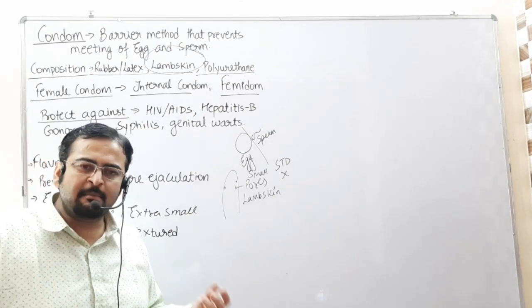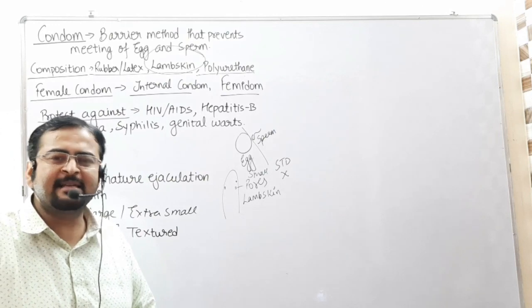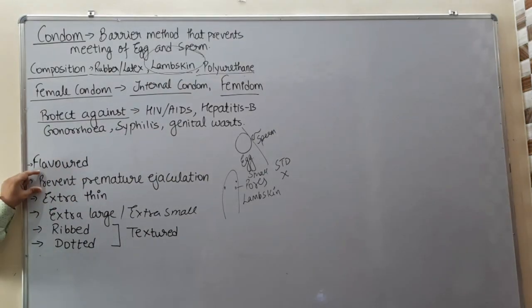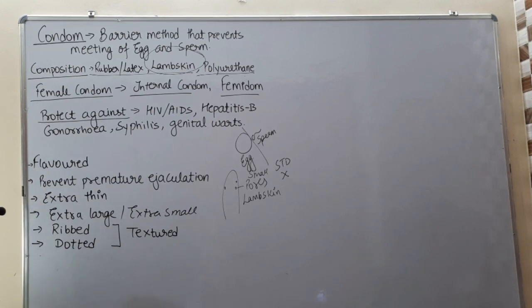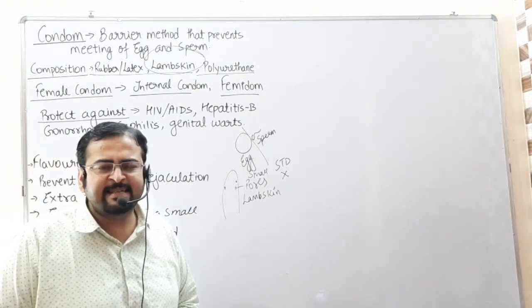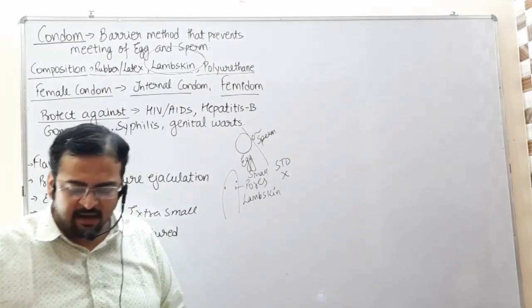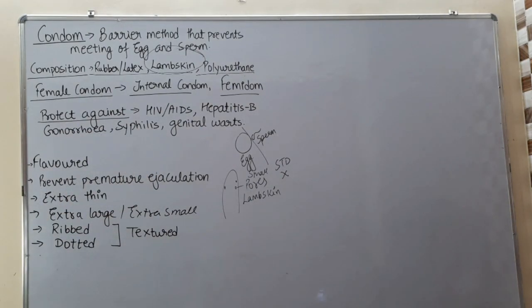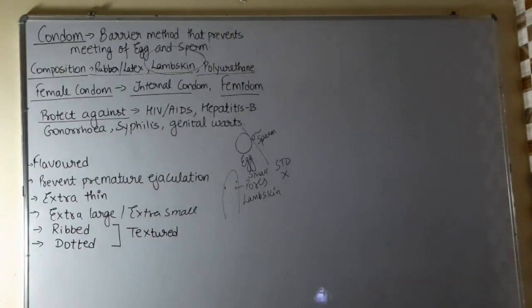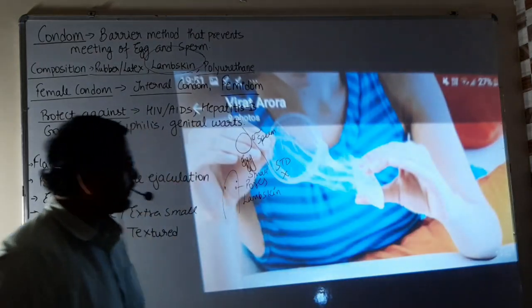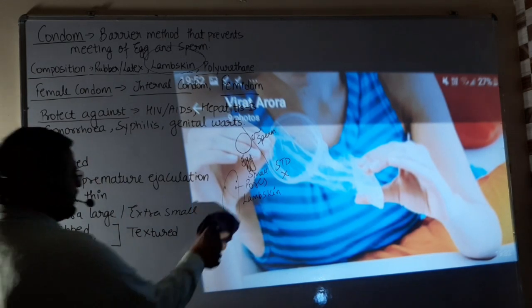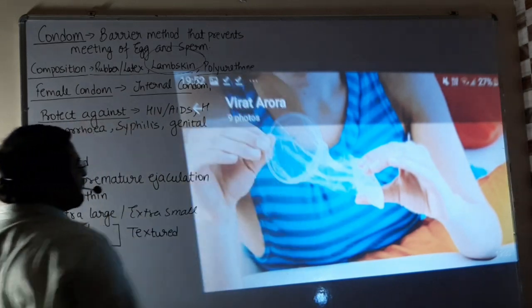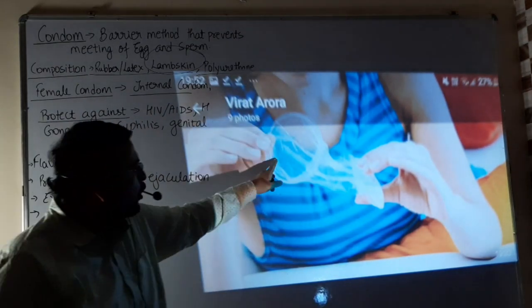Now I am going to show you some visuals of the condom. Here we have the condom for female, this is a female condom or femidome which is used by females and it has one side open and one side closed.